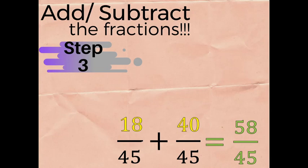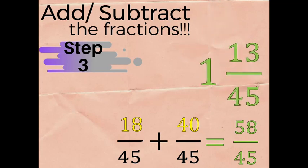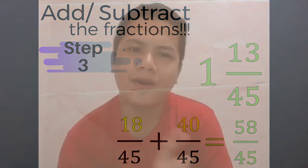So 18 plus 40 gives us 58 over 45 — copy the same denominator. Our answer is an improper fraction, so we must convert it to a mixed fraction. Dividing 58 by 45 gives us 1 and 13 over 45. You're now done with the first method — let's move to our second method.